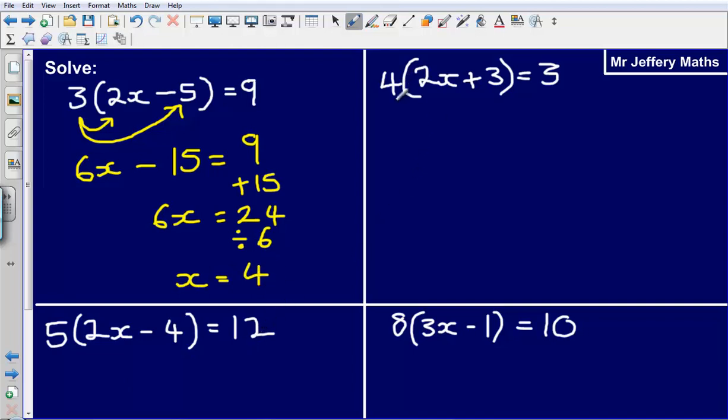Next one I've got 4 bracket 2x plus 3. So start by multiplying out the bracket: 4 times 2x gives me 8x, 4 times plus 3 gives me 12, and that is all equal to 3.